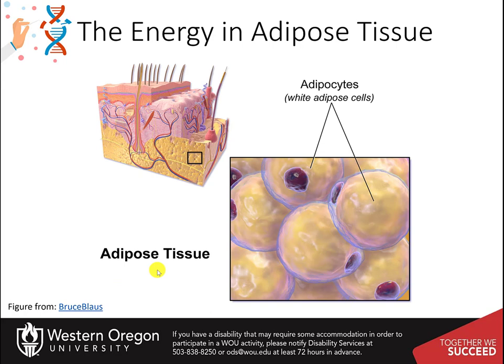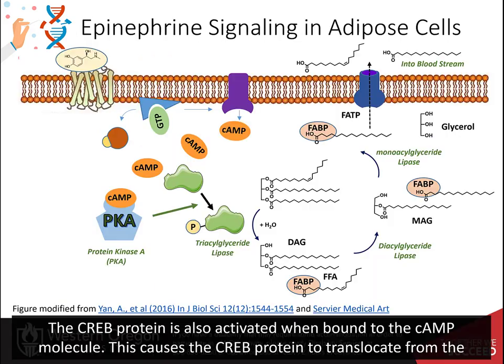The energy available from stored fats is about 85 percent of the total energy available in the body. In adipose tissue, especially white fat cells, fatty acids are liberated and released in response to hormone stimulation.